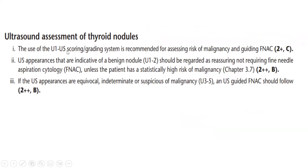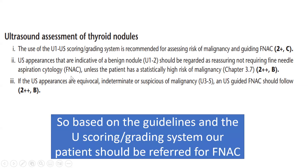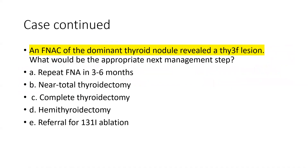The U1 to U5 scoring system is recommended for assessing the risk of malignancy and guiding referral. Ultrasound appearances indicative of a benign nodule should be regarded as reassuring and do not require FNAC, unless the patient has a statistically high risk of malignancy. If the ultrasound appearances are equivocal, indeterminate, or suspicious of malignancy — U3 to U5 — then an ultrasound-guided FNAC should be performed. These are the recommendations from the British Thyroid Association Guidelines, and based on this, our patient was referred for FNAC.